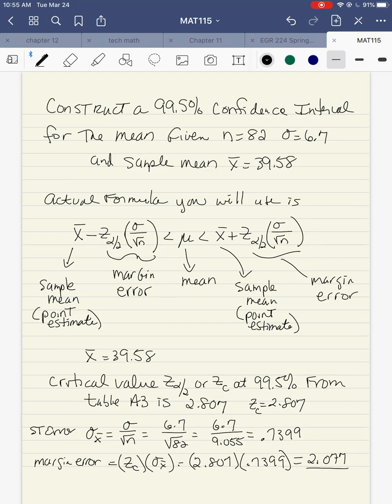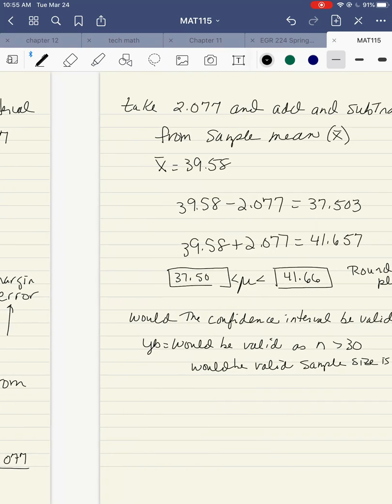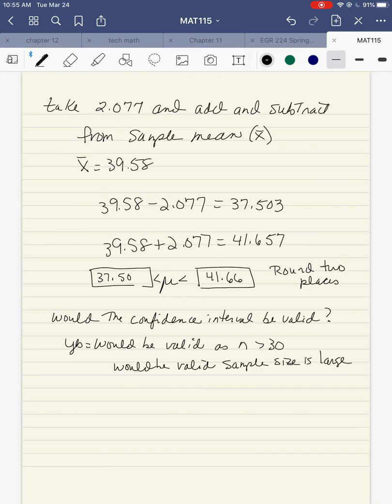If I look at the formula up here, the margin of error is added and subtracted. So I'm going to take the 2.077, which was my margin of error, and add and subtract it from the sample mean. The sample mean given was 39.58. So I take 39.58 minus 2.077, and then 39.58 plus 2.077. So I get the range of 37.503 to 41.657. On the computer, they want you to round it to two places, so I would put in 37.50 and 41.66.